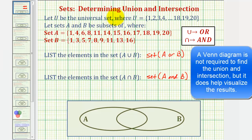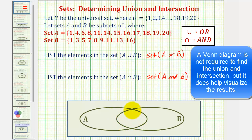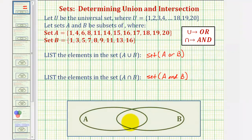Let's set this up using a Venn diagram where this rectangle represents the universal set. Here we have the elements in set A, here we have the elements in set B, and this overlapping region would be the elements in set A and B.